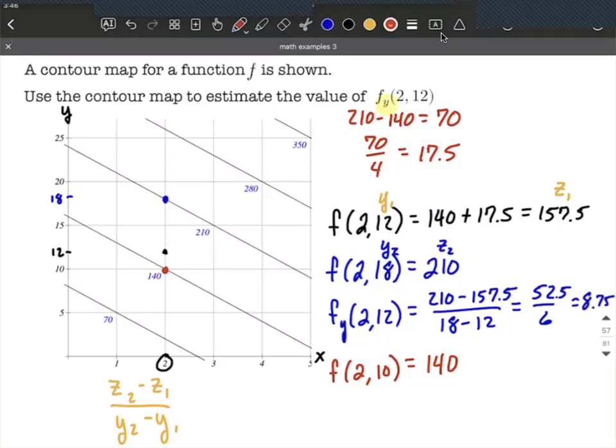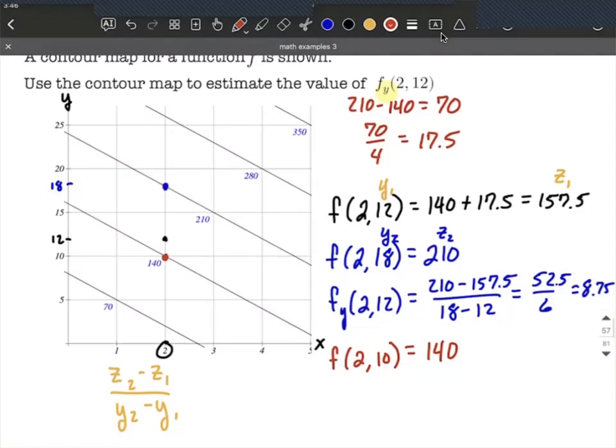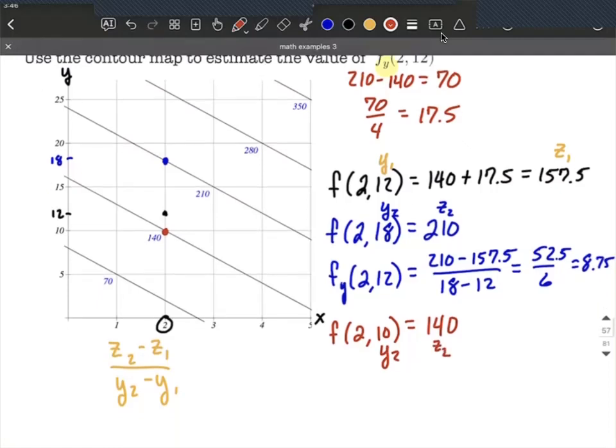Now, if we use the red dot down below there, that would be my y2, and that would be my z2. That calculation would look like this. It's going to be 140 minus, again, our z1 is 157.5 over y2, which is 10 minus y1, which is 12, which gets us negative 17.5 divided by negative 2. Two negatives divide out, make a positive 8.75.